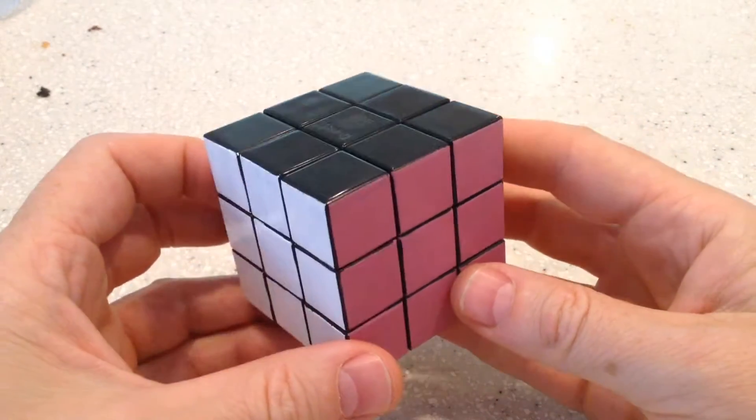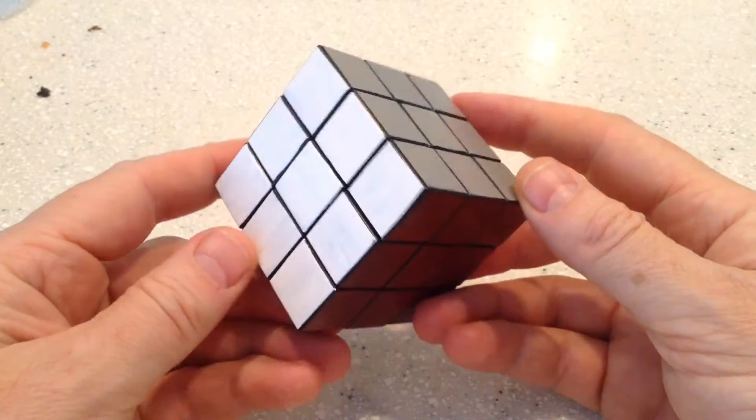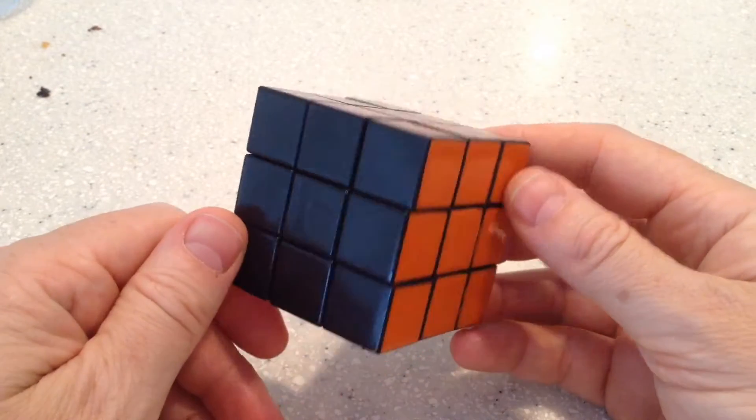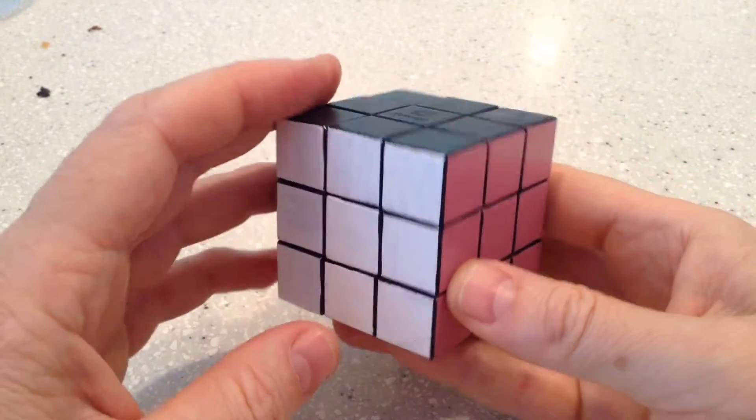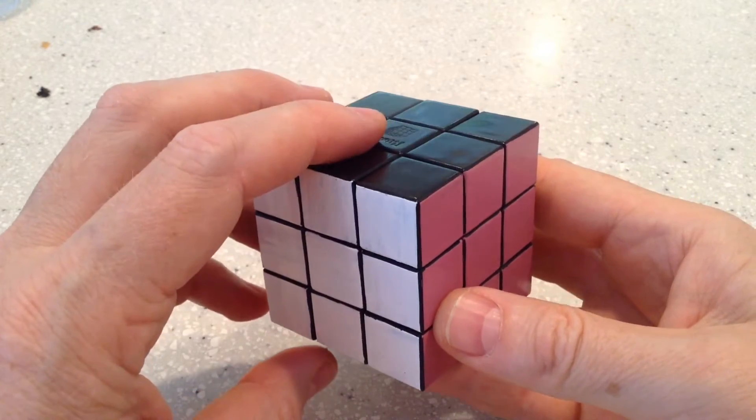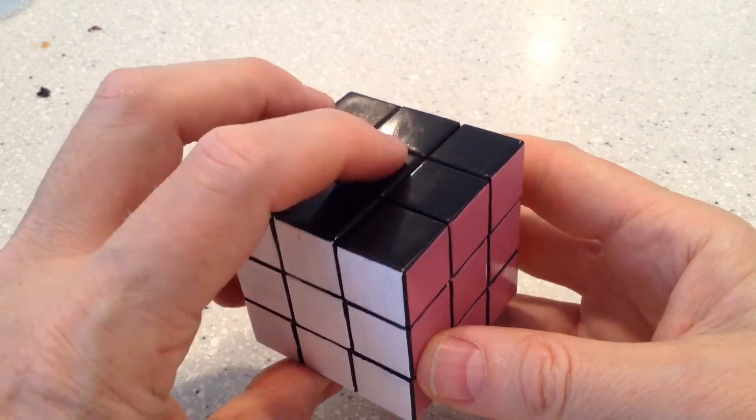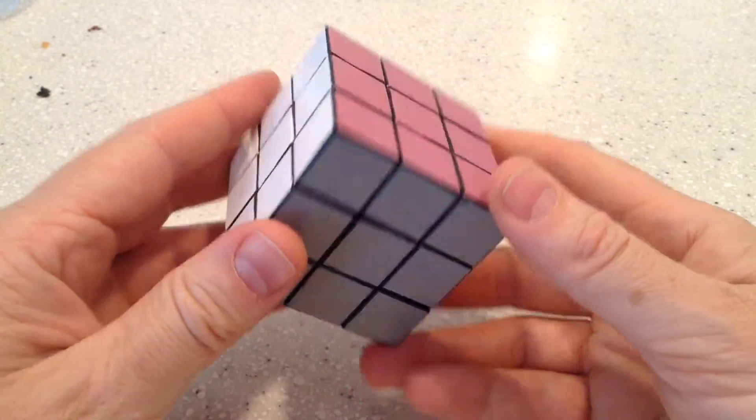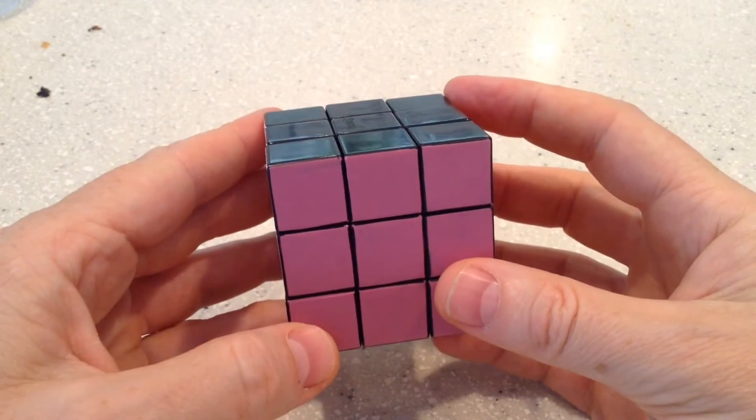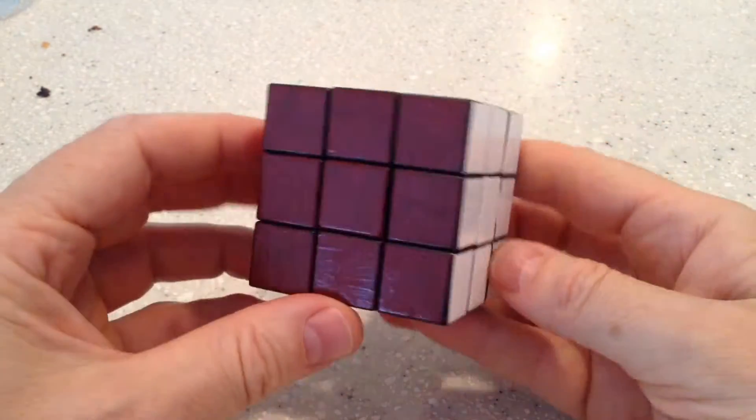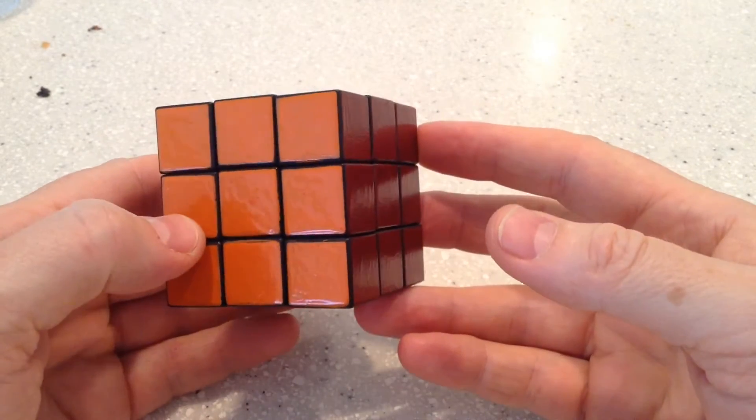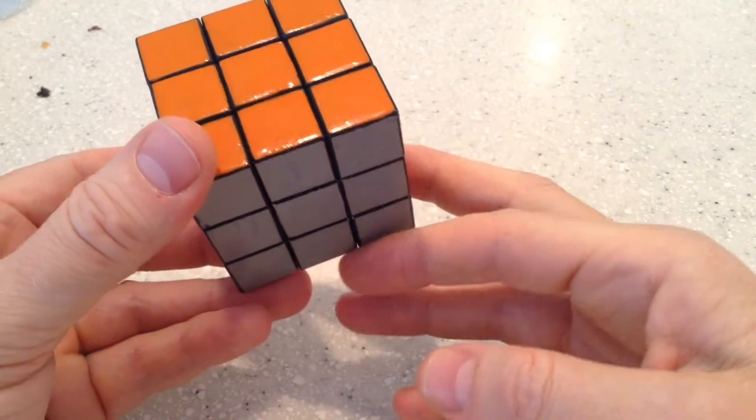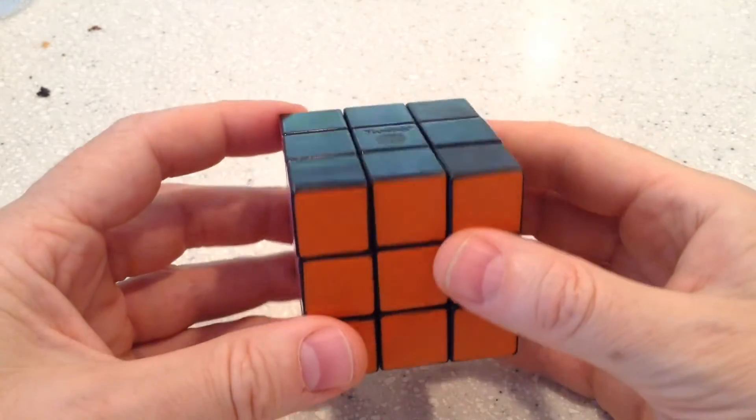Now the reason I show you this move at all is because it has an interesting effect on the lower face. So, if we consider black to be the top and grey to be the bottom, I'll start with a completed cube, and I'll perform that combination of moves, and we'll just look at what the effect is on the bottom layer.